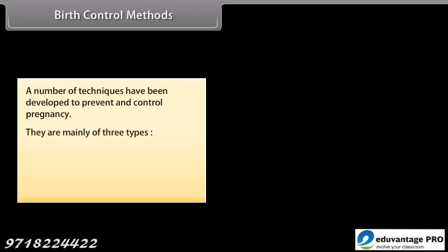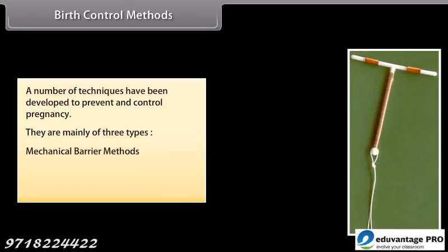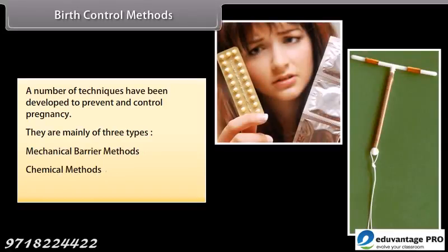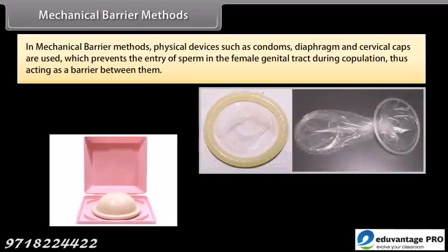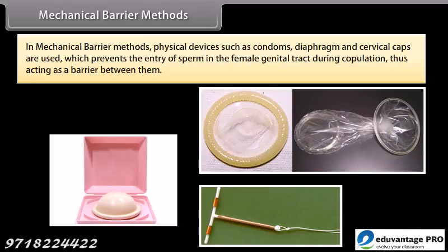Birth control methods: a number of techniques have been developed to prevent and control pregnancy. They are mainly of three types: mechanical barrier methods, chemical methods, and surgical methods. In mechanical barrier methods, physical devices such as condoms, diaphragm, and cervical caps are used, which prevent the entry of sperm into the female genital tract during copulation, acting as a barrier between them.